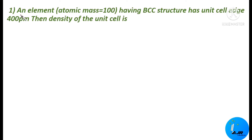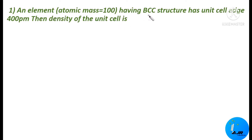Read the first question students. An element whose atomic mass is 100, having BCC structure — BCC means body centered cubic structure — has unit cell edge length 400 pm, where pm means picometer. Then the density of the unit cell is to be calculated. They have given a BCC structure with edge length 400 pm and atomic mass, asking you to calculate the density.